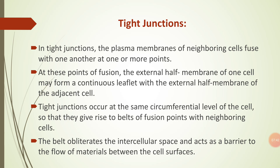Next are tight junctions. In tight junctions, the plasma membranes of neighboring cells fuse with one another at one or more points. At these points of fusion, the external half-membrane of one cell may form a continuous leaflet with the external half-membrane of the adjacent cell. Tight junctions occur at the same circumcellular level of the cell, giving rise to a belt of fusion points with neighboring cells. This belt obliterates the intercellular space and acts as a barrier to the flow of material between the cell surfaces.